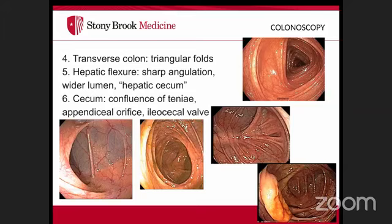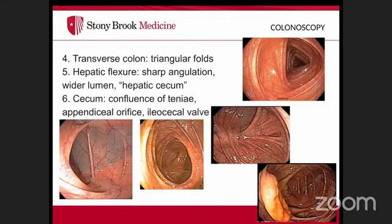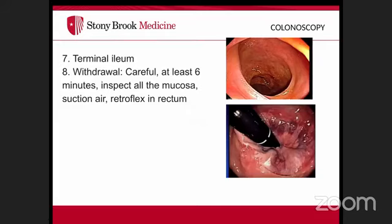The hepatic flexure has a sharp angulation and can be confused with the cecum if folds are not descended. Once past the hepatic flexure, the scope often falls into the cecum, especially in patients with a short ascending colon. In the cecum, identify landmarks: the confluence of the teniae, the appendiceal orifice, and the ileocecal valve. Intubate the terminal ileum if evaluating for Crohn's disease, biopsies, or bleeding.